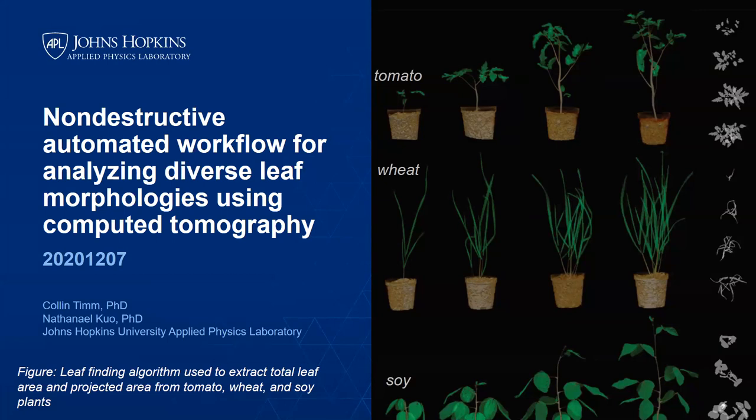The Plant Phenome Journal webinar speaker for today is Dr. Colin Tim, a research scientist at Johns Hopkins Applied Physics Laboratory, and Nathaniel Kao, who was also involved in this project as first author. They're going to be talking about a non-destructive automated workflow for analyzing diverse leaf morphologies using computed tomography.